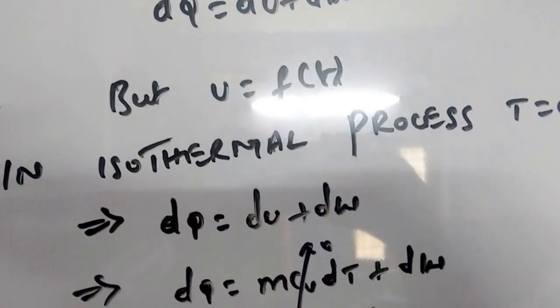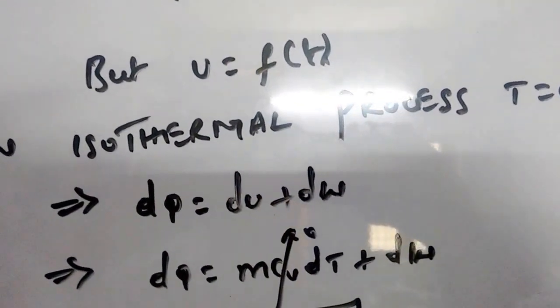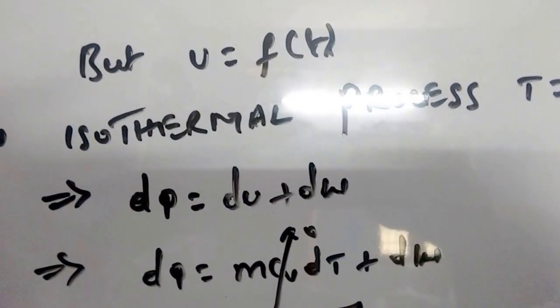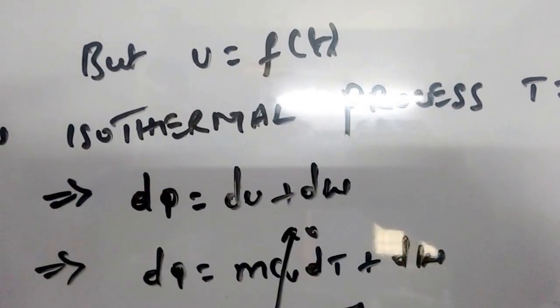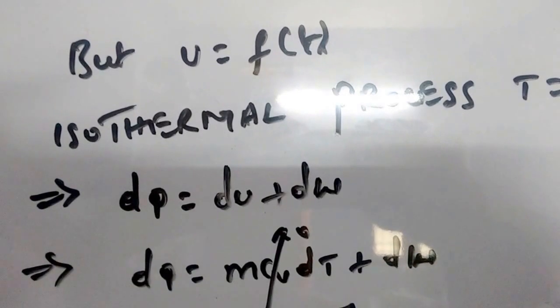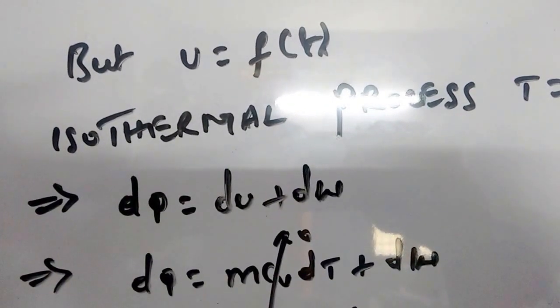We can write the same equation as follows: dQ is equal to mCv dt plus dw, where m is equal to mass of the gas, and cv is equal to specific heat at constant volume process, and dt is the change in its temperature.